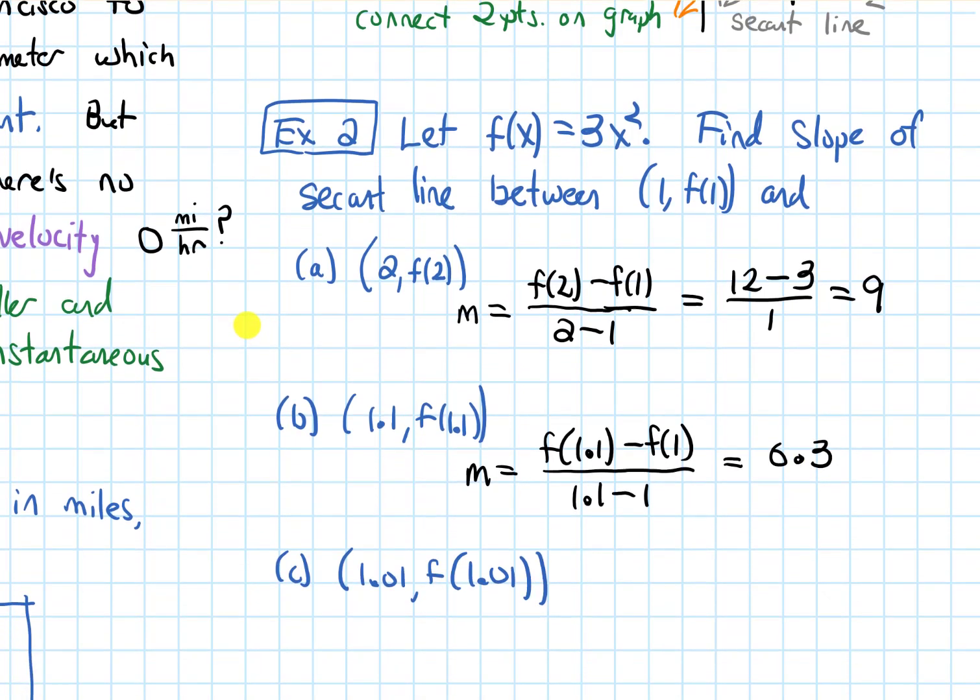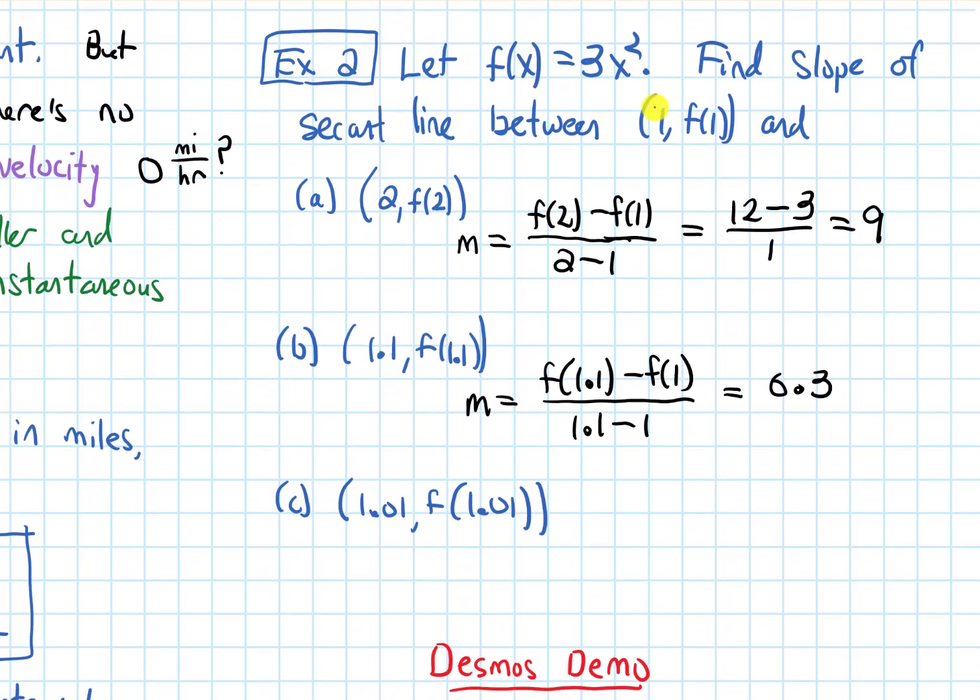Now let's make it even better. Now let's get it between 1 comma f of 1 and 1.01 comma f of 1.01. So now my slope is going to be f of 1.01 minus f of 1 over 1.01 minus 1, and this ends up being 6.03. So it seems like these values are getting pretty close to 6.